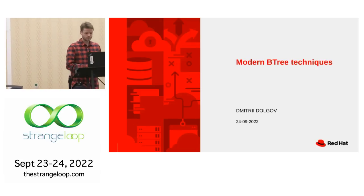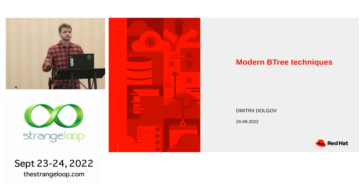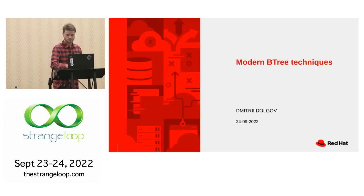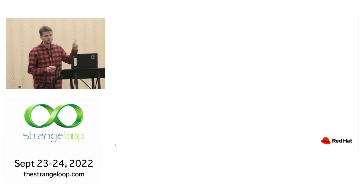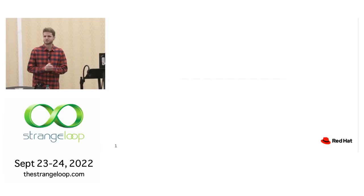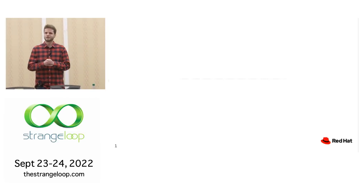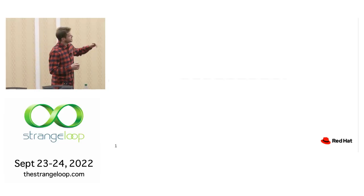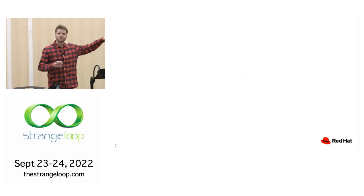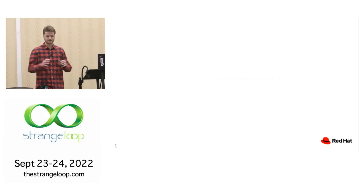Right from the start, I would like to take you out of your comfort zone by stating that this is a B-tree. Can you even see something here? Not really, right? It's actually a small, thin line, almost indistinguishable from really nothing.